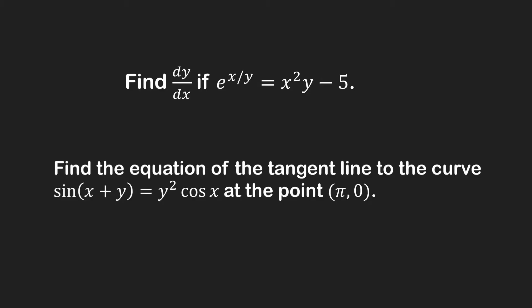In this video, we're going to solve two problems using implicit differentiation. First, we compute the derivative given a relation between x and y. Second, we find the equation of the tangent line to a curve at the point pi comma 0. Let's dive in.